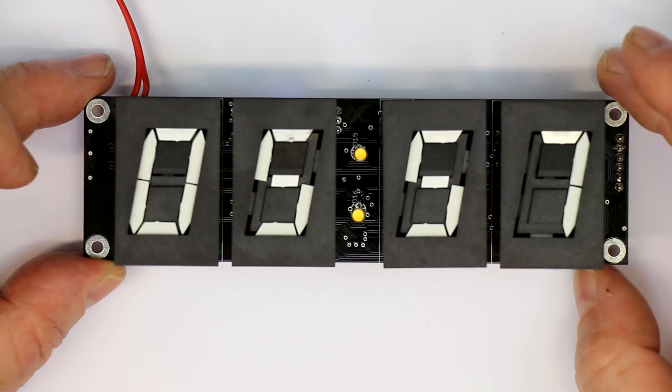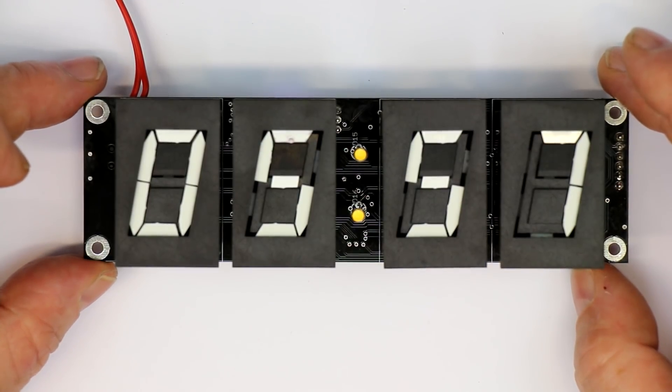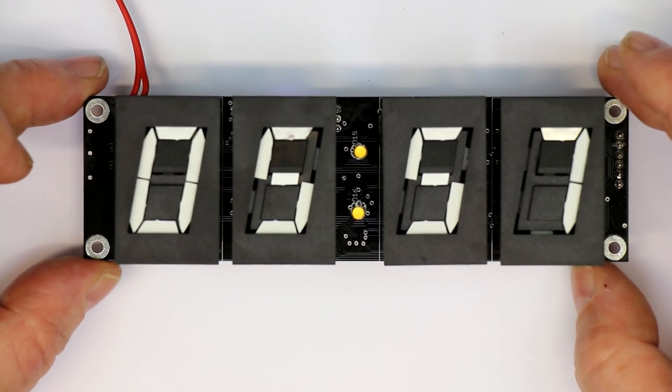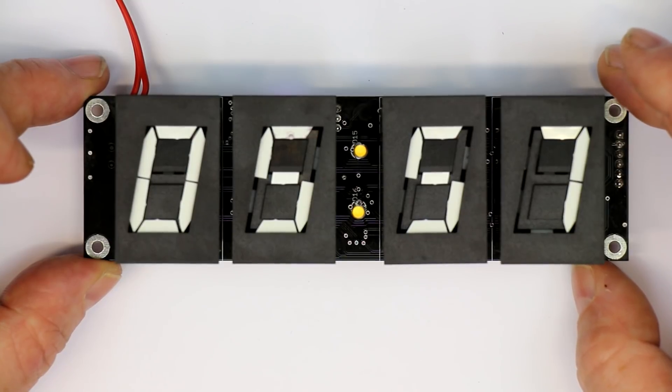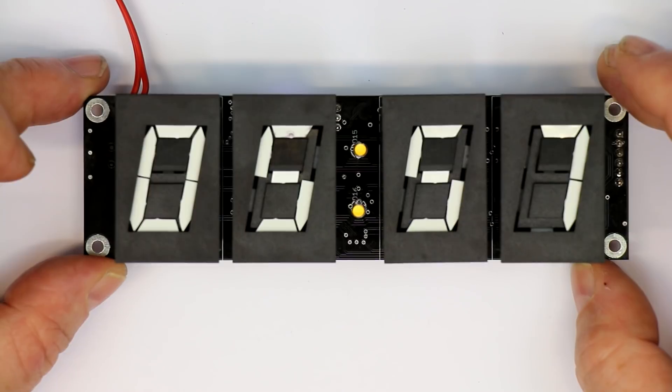Second, you need the PCB. The cheapest way is probably from PCB way, but then you get even five, but could still be the cheapest way.